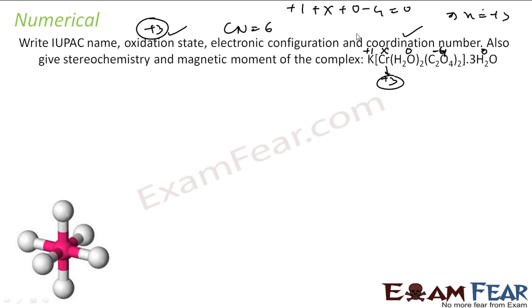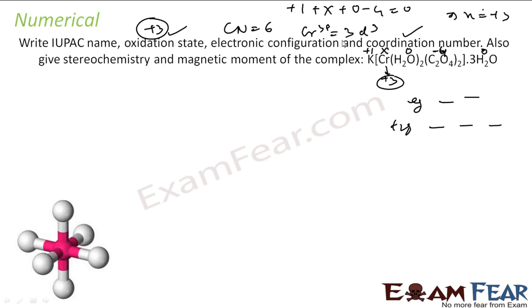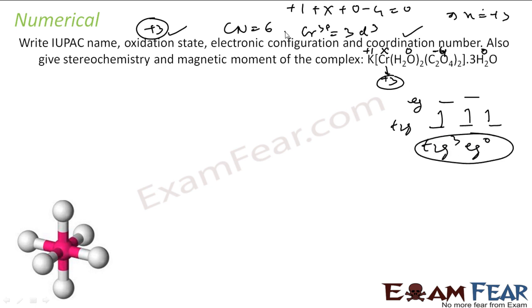For electronic configuration, this complex is octahedral. You can draw the energy level diagram with t2g and eg. Water is a weak ligand. The metal is Chromium 3+, which has a 3d3 configuration. Since we only have three electrons to fill, the electronic configuration will be t2g3, eg0. That is the d-orbital electronic configuration.